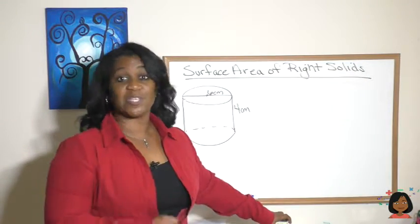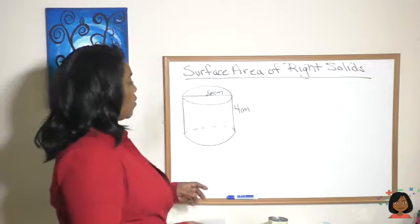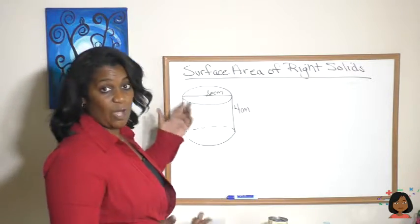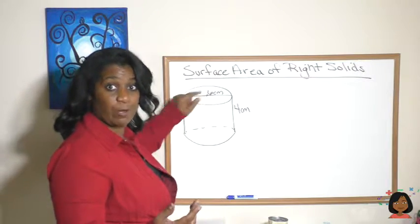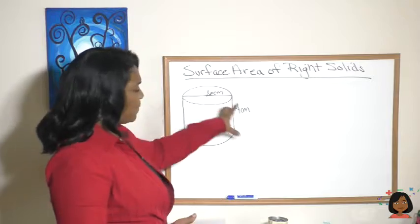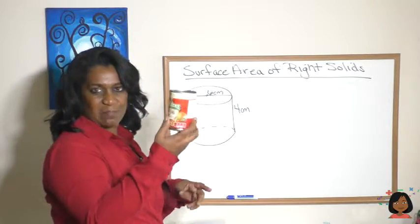The last right solid I want to show you is a cylinder. And how do we find the surface area of a cylinder? Well, we have the circle. We know we can find the area of a circle and then we have to double it because there's one on the top, one on the bottom. But what is happening in the middle here?